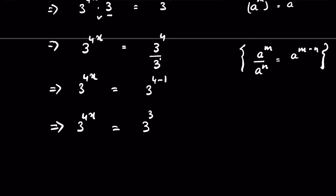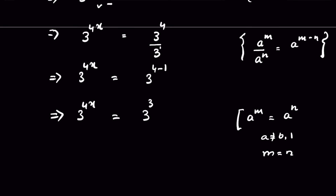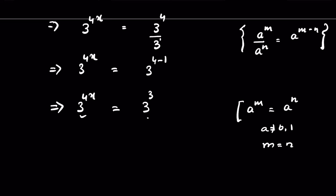Both bases are the same. Using the identity that if a raised to the power m equals a raised to the power n, and a is not equal to 0 or 1, then m equals n — meaning we can compare exponents directly. So 4x equals 3, giving us x equals 3 upon 4. This is our answer.